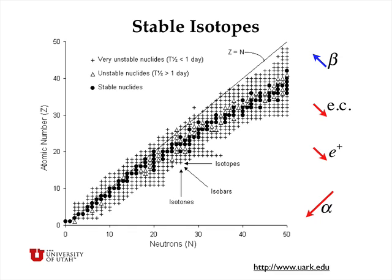Here's a graph of stable isotopes. On the x-axis you have the number of neutrons going from 0 to 50, and on the y-axis the number of protons, or the atomic number, going from 0 to 50. Most of the stable isotopes are fairly near the 45-degree diagonal on this chart, where the number of protons is equal to the number of neutrons. As you get to very heavy atoms, the stable nuclei have somewhat greater numbers of neutrons than protons, but it's fairly close to the 45-degree diagonal.